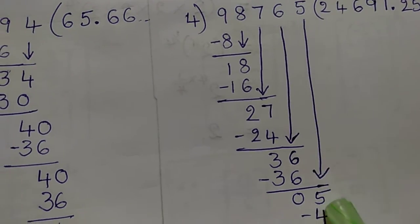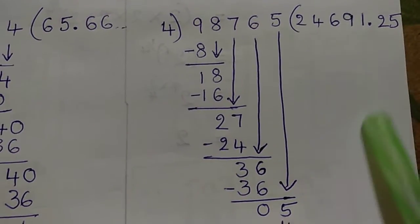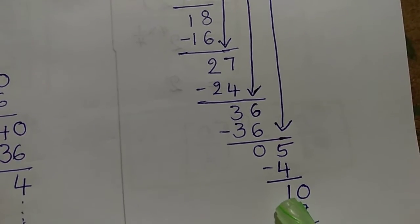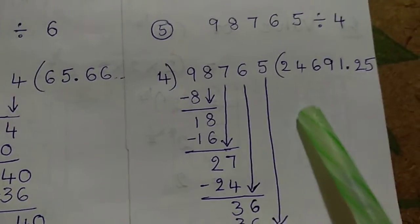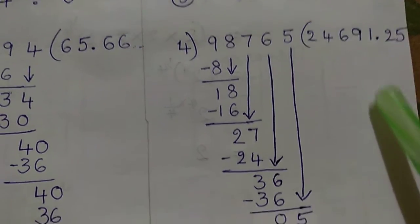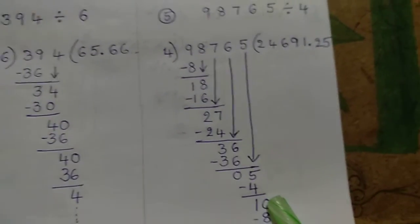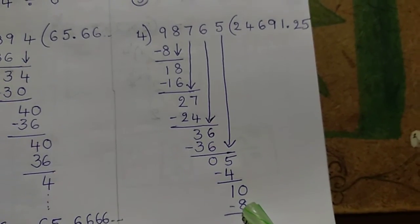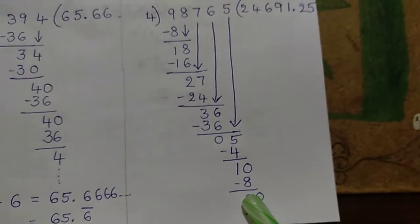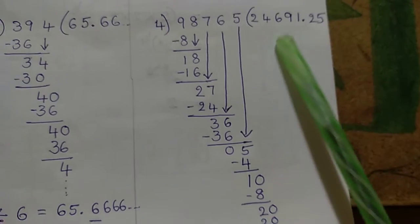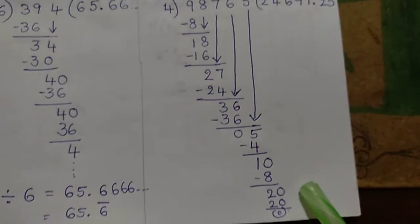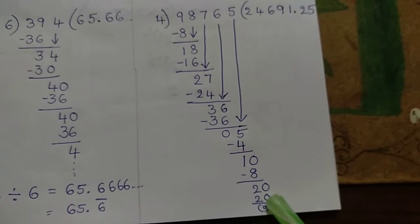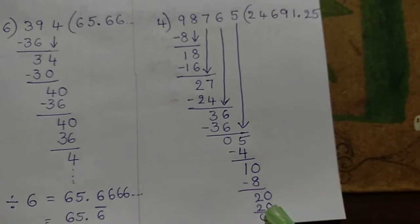We will write number 5. Then 4 times 5 is 20. 20 minus 20 is 0. That means the sum will end here, with no remainder — the division is exact.